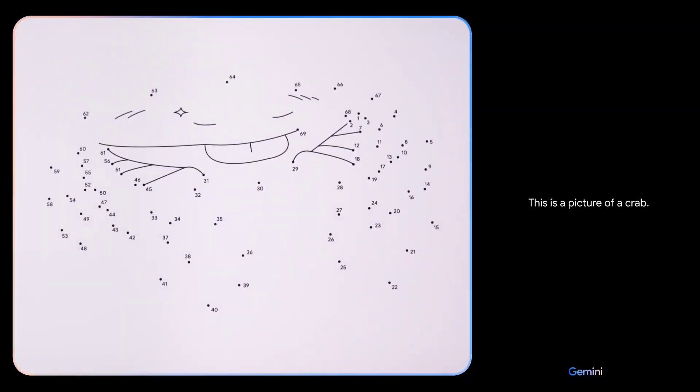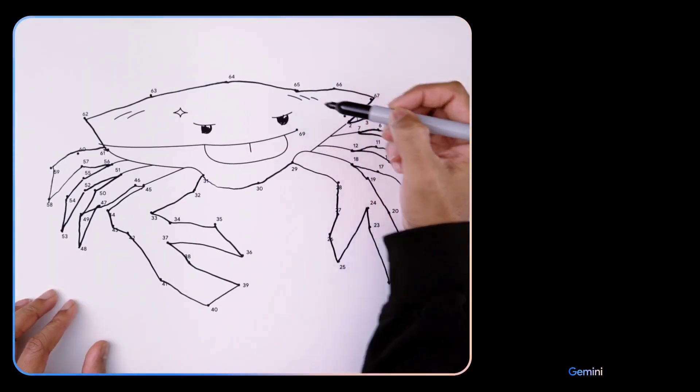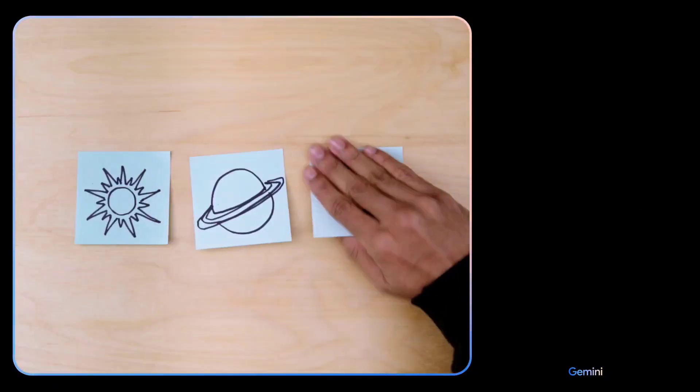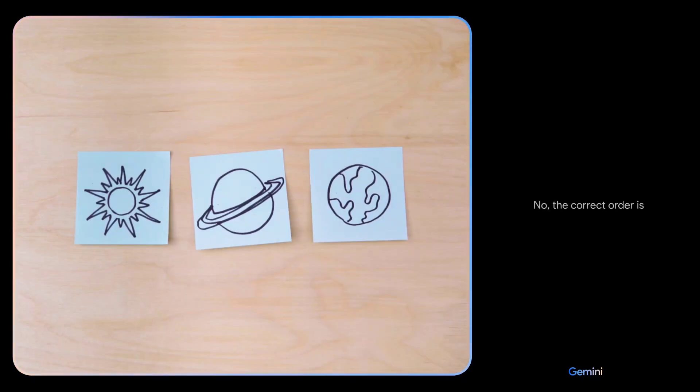This is a picture of a crab. That's right. Is this the right order? No, the correct order is sun, earth, saturn.